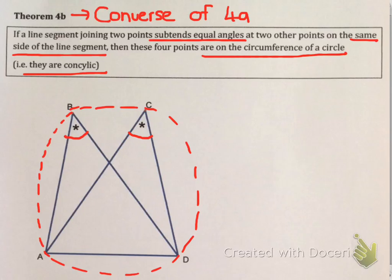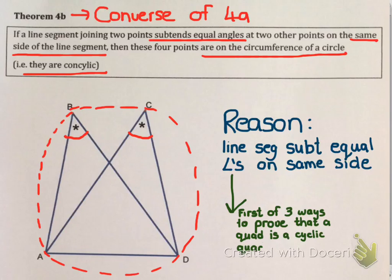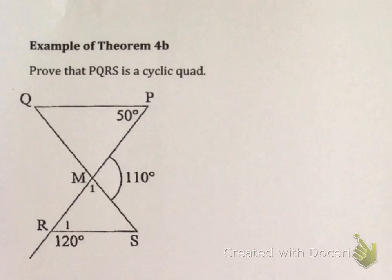So what this means is if you're given two angles equal on the same side of AD, a circle can be drawn all the way around going through A, B, C, and D. A word for this quadrilateral ABCD is a cyclic quadrilateral. A cyclic quadrilateral is a quadrilateral where the four corners lie on the circumference of a circle. The reason we use when we quote Theorem 4b is we have a line segment subtending equal angles on the same side. This is the first of three ways to prove that a quadrilateral is a cyclic quad. You do not have to know the proof of this, only of Theorem 4a.